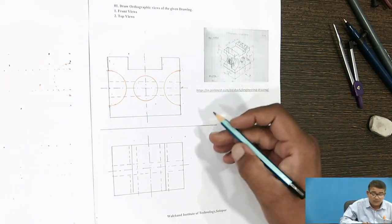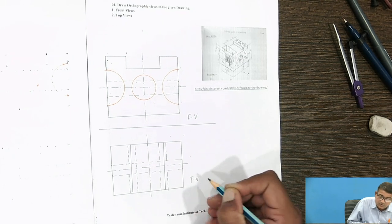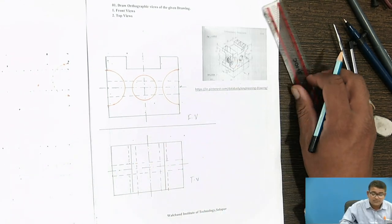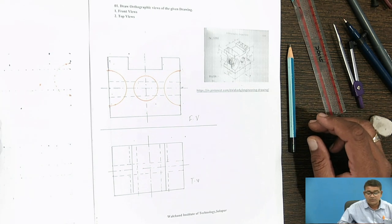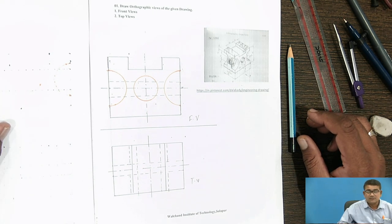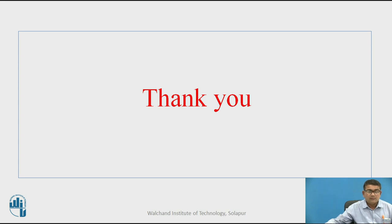This is all about the top view. It is the front view in the direction of X and the top view. This is a simple object showing the front view and top view — that is the orthographic drawing for the given object. References for this topic: Engineering Graphics by Professor M.L. Ramade, Volume 1, Division Publications. Thank you.